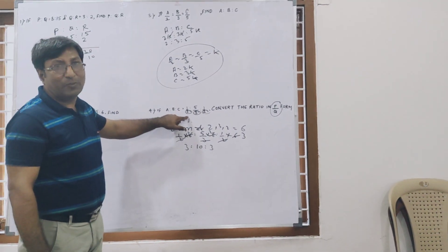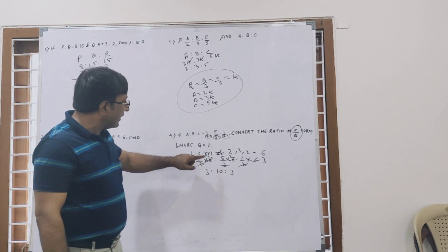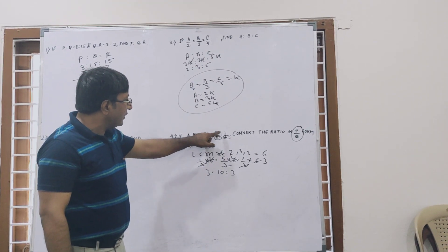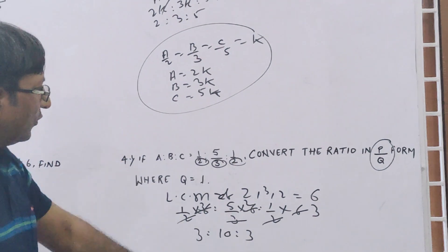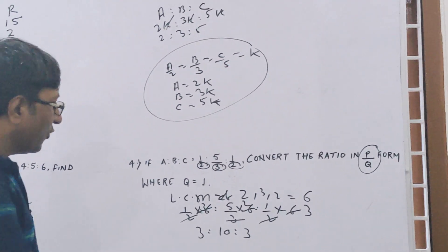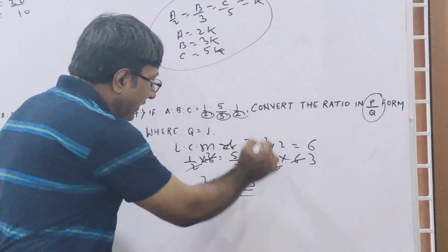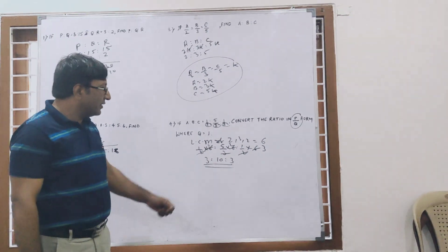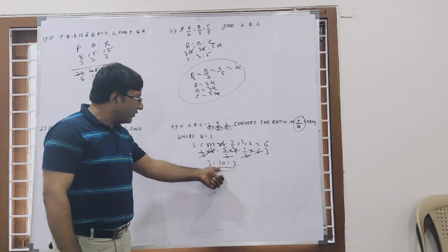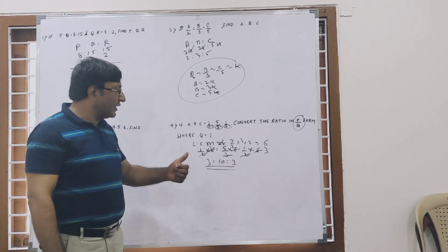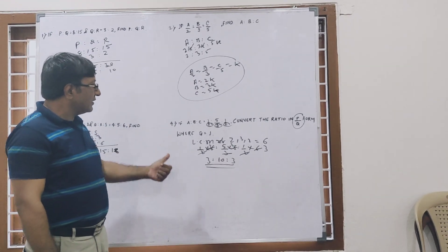Again, one-half into 6 is 3, 5 by 3 into 6 is 10, and half into 6 is 3. So your required ratio is 3 ratio 10 ratio 3. This is the form of P by Q where Q is 1—3 by 1, 10 by 1, 3 by 1. So this is correct.